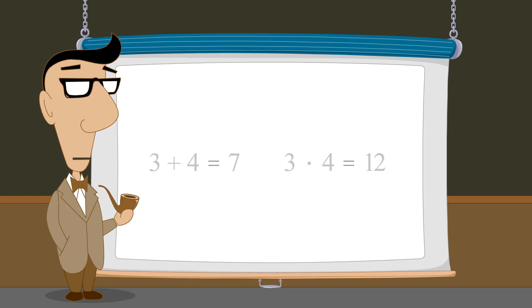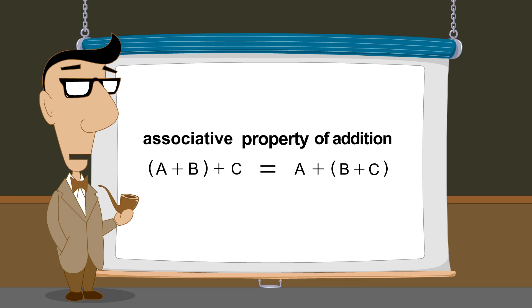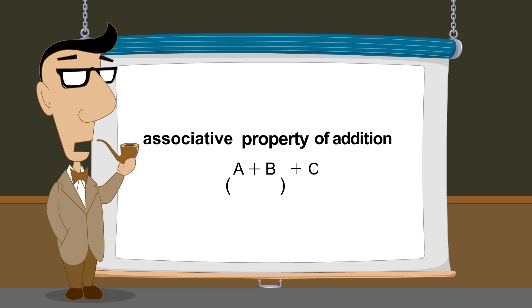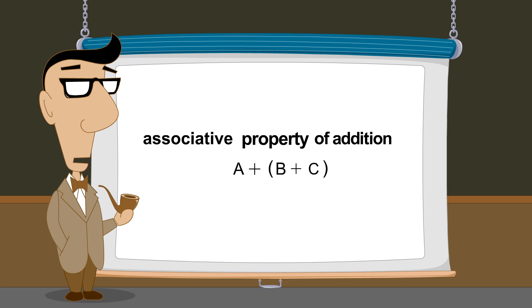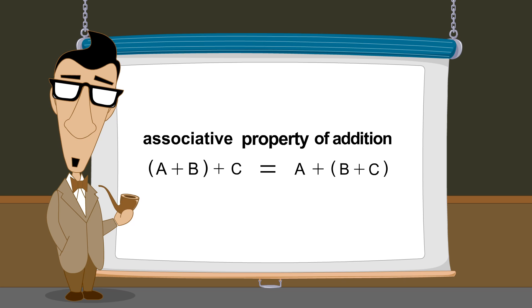As we saw, addition also has an associative property. According to the associative property of addition, three or more numbers which are added can be grouped in any way without affecting the result. Does this also apply to multiplication?